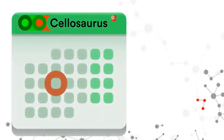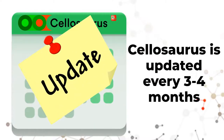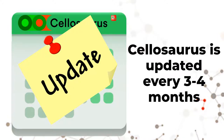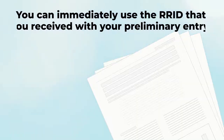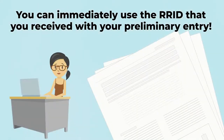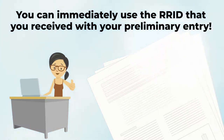Cellosaurus is updated every 3 to 4 months. Thus, depending on when a new RRID was created, it can take up to 4 months before you can find it in the Cellosaurus on Xpasy. However, you can use the RRID of your preliminary entry even if this entry is not yet available in Cellosaurus.